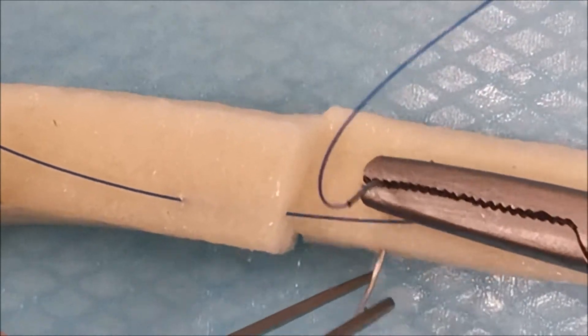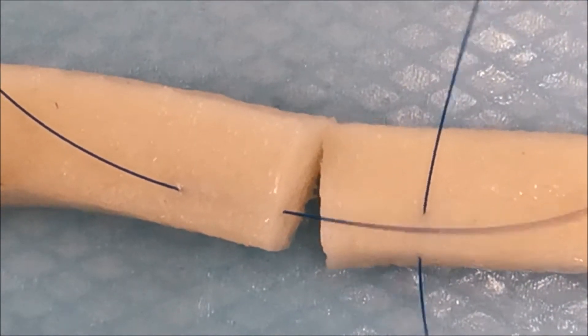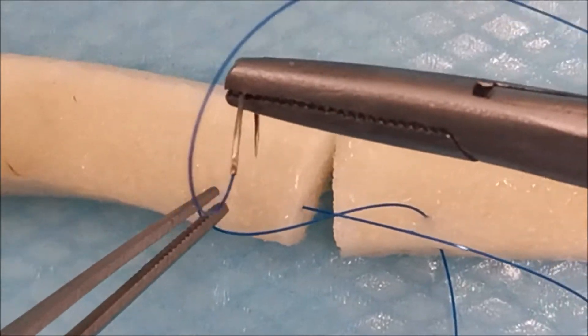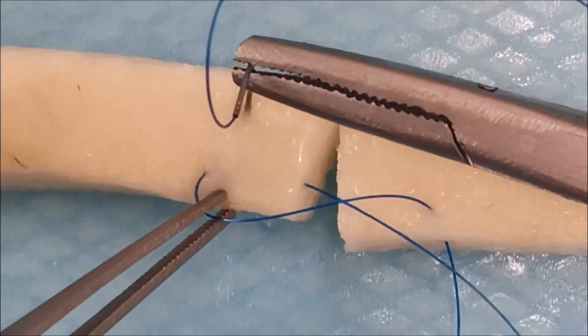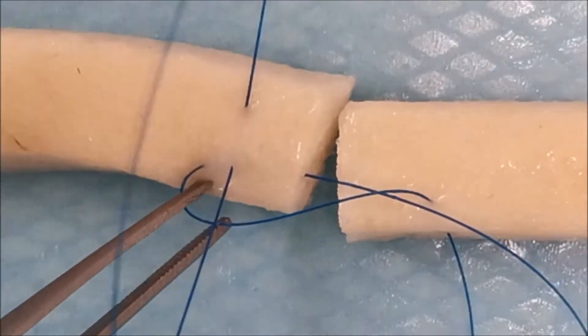The epitendinous suture is small bites on the epitendon, ensuring you don't go deep enough to go through your core suture. You're taking bites towards yourself. Each subsequent bite is going further away from yourself.